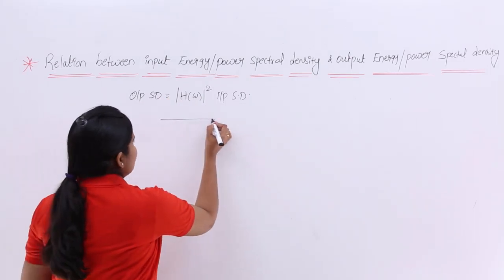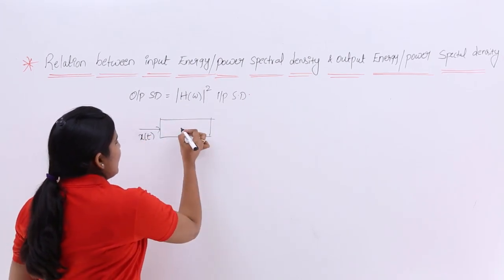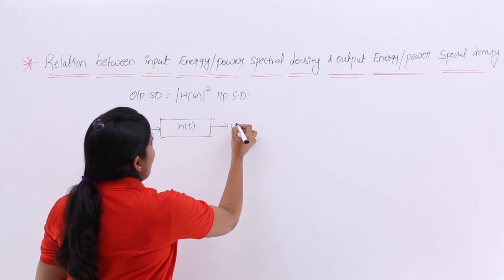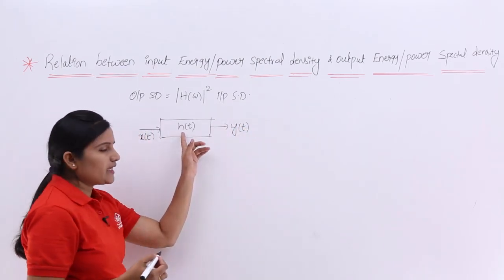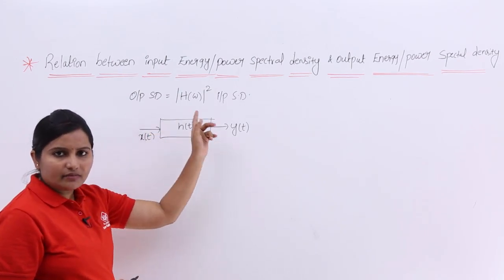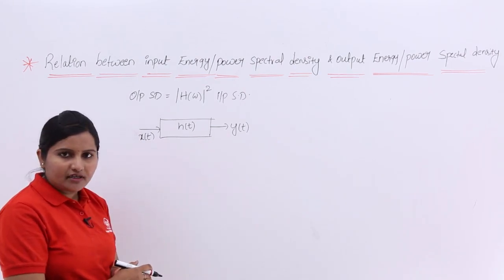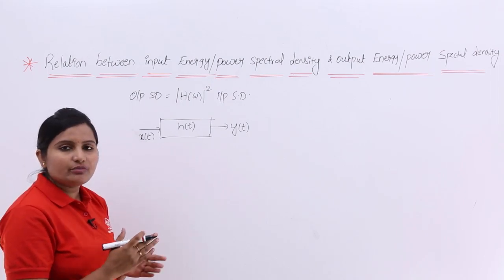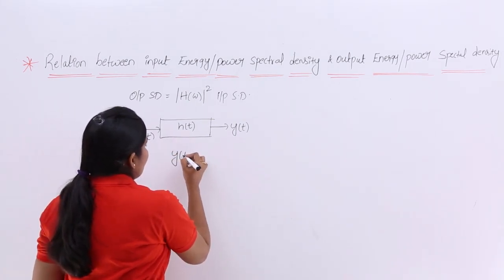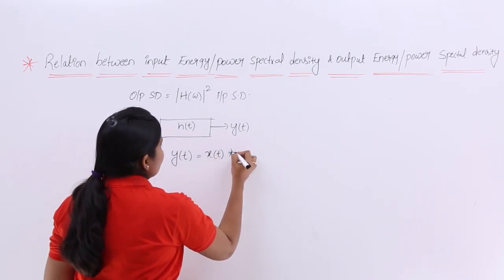To prove this, I want to consider a system. For this system I want to give any signal X of t, where the impulse response of the system is H of t, and the output of the system is Y of t based on the characteristics of the system. According to the basics of a linear time-invariant system, the output can be related with input using the impulse response as Y of t equals X of t convolved with H of t.